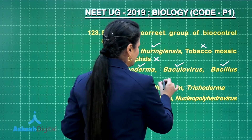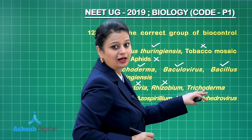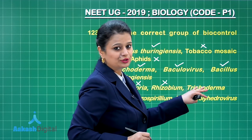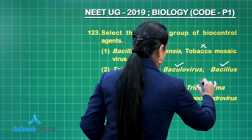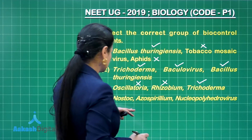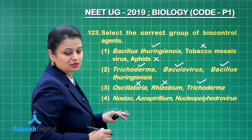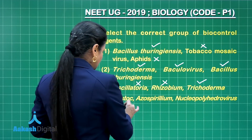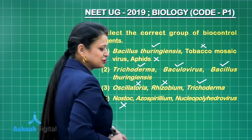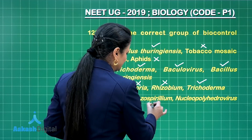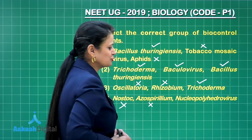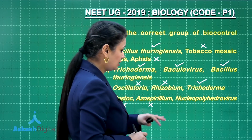Rhizobium is also a nitrogen-fixing bacterium. Trichoderma — yes, again a biocontrol agent. Nostoc is involved in nitrogen fixation. Isospiralum — again, nitrogen fixation.